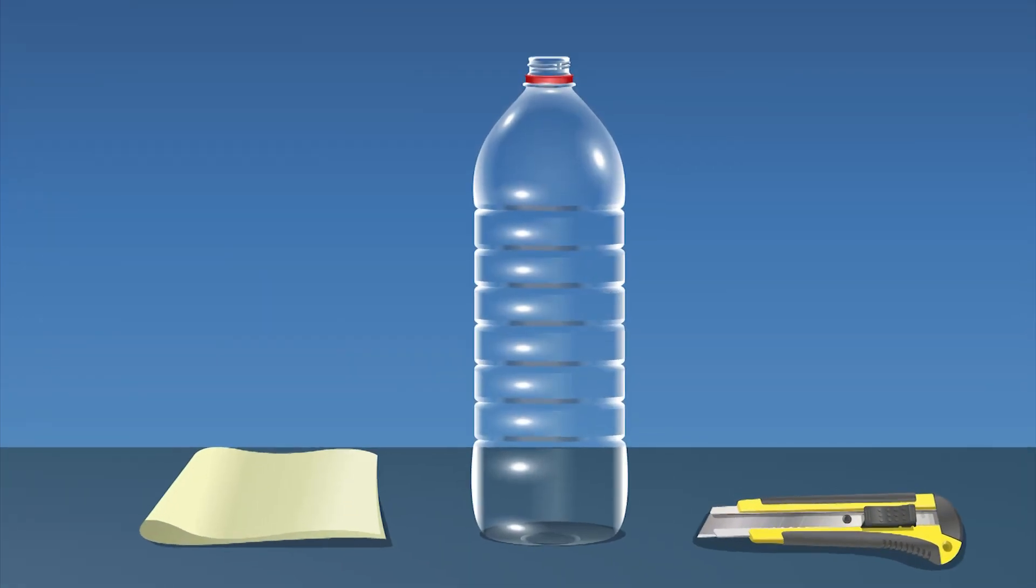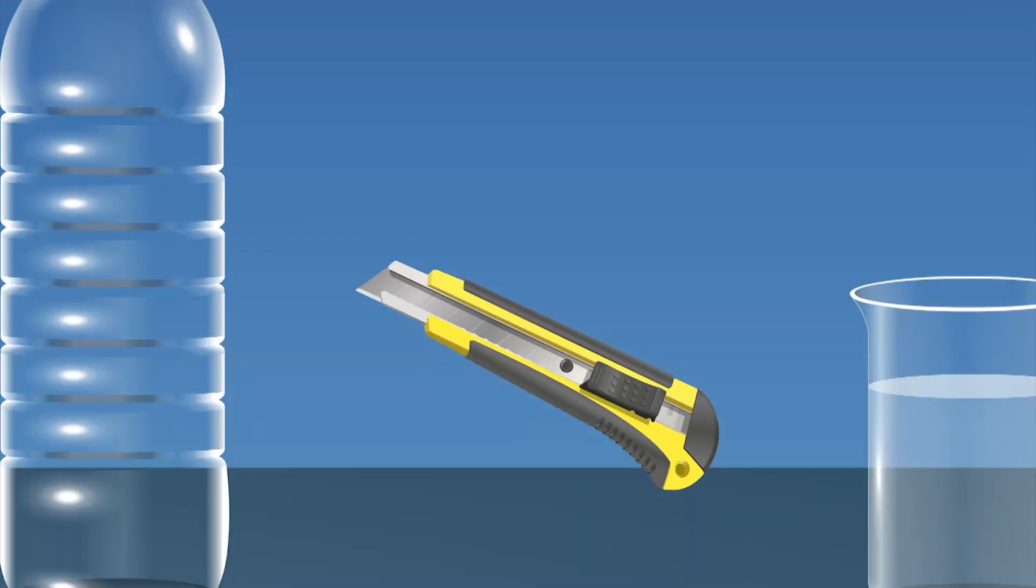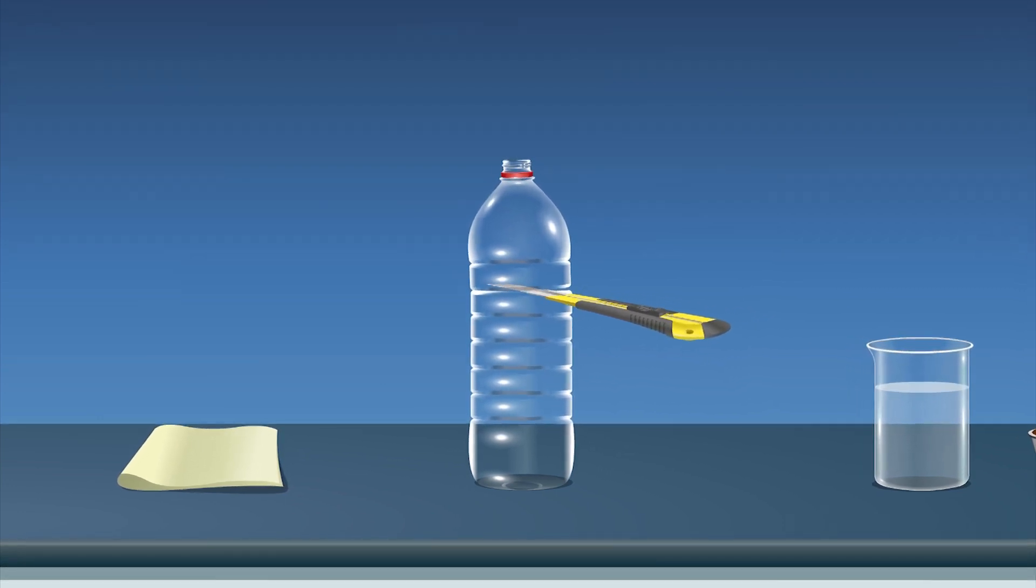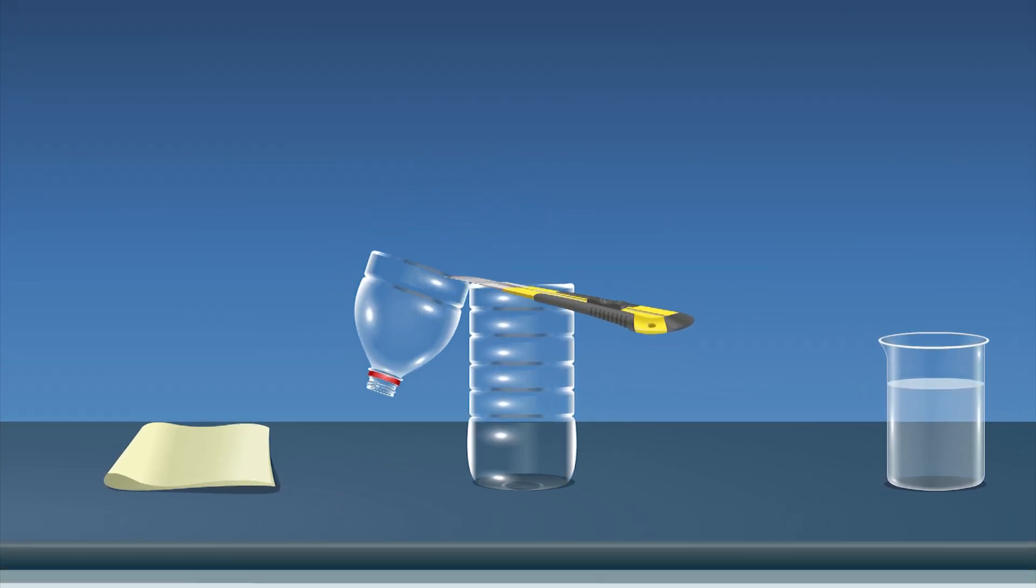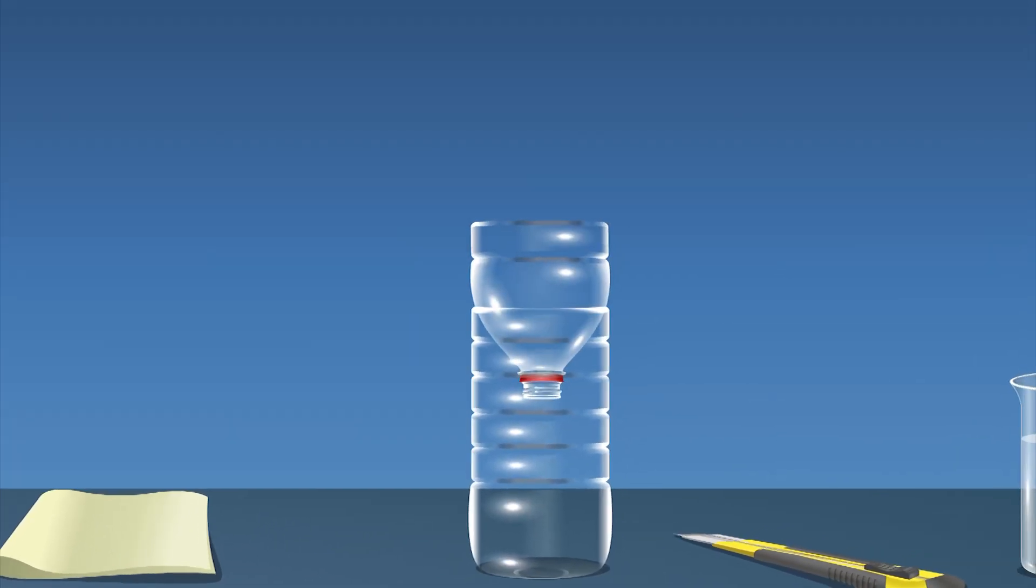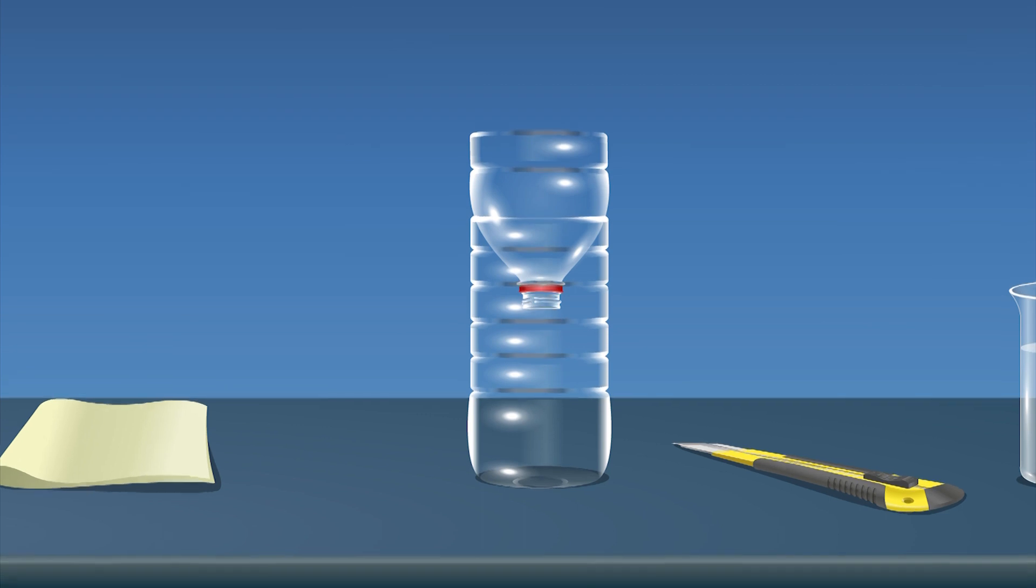Take a clean used plastic bottle. Cut the bottle with a knife about 5 centimeters below the neck to divide it into two parts. Invert the upper part of the bottle and keep it over the lower part.